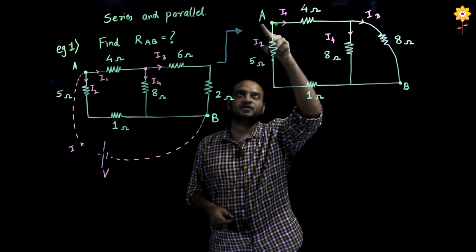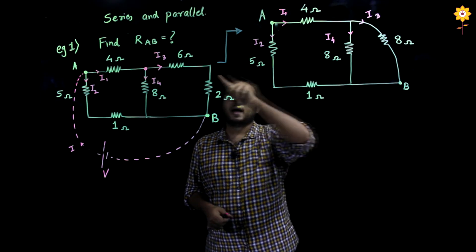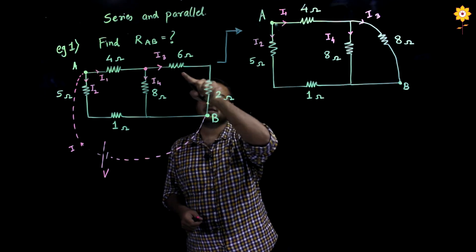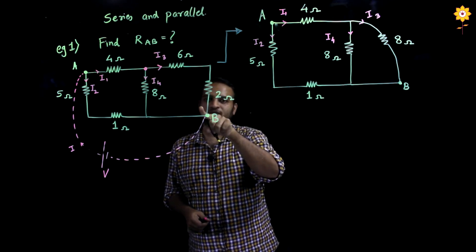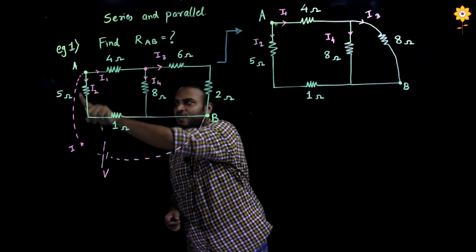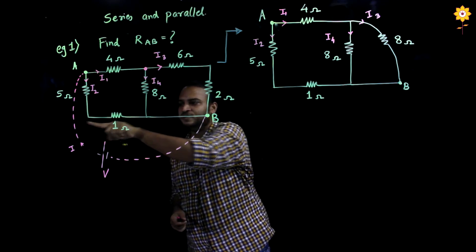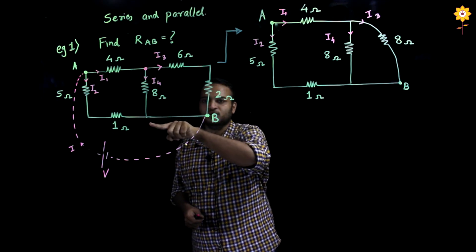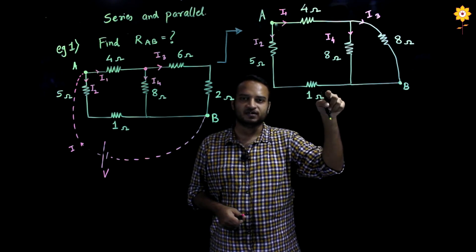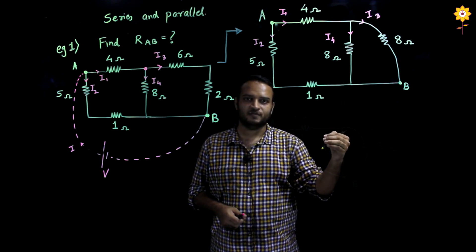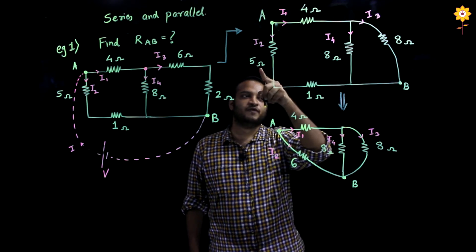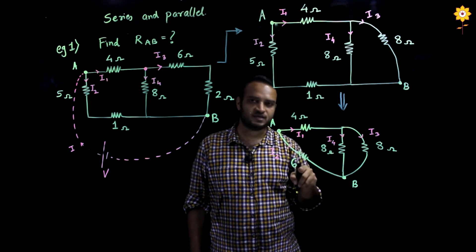Now, this is my terminal A and B which I have maintained. As we have seen that current I3 flows in 6 ohm and the same current goes in 2 ohm, in the same manner if I look at I2 — the current I2 which is flowing in 5 ohm, the same current will go in 1 ohm. So in this case again I identify that 5 and 1 will go in series. Further my network gets reduced: 5 and 1 add up to make 6 ohm.